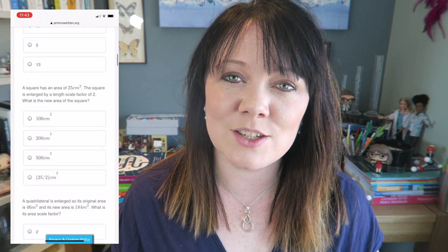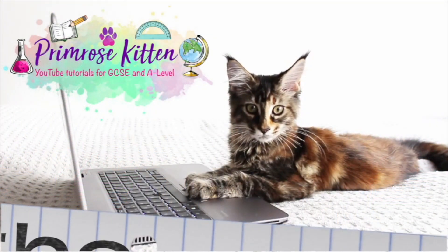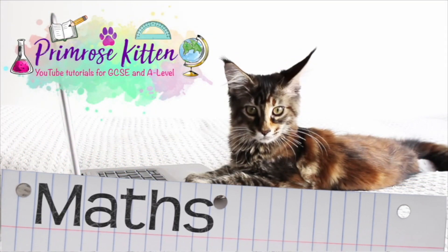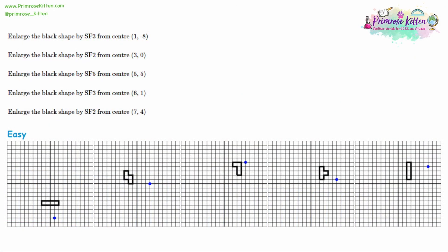If you really want to test yourself, then there are loads more examples waiting for you over on my website. Have a look at enlargements. After question one, we enlarge the black shape by SF3 — that means scale factor three. Another way to explain scale factor three is to say that we are multiplying the shape by three. We are making it three times bigger. And then we have a center of enlargement at one, negative eight.